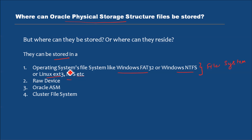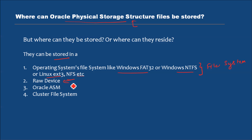These file systems are provided by the operating system installed on the machine where the database will be installed. So that's one option — option number one is file system. The next option is raw device. Most of the files in the physical storage structure can be installed on a raw device, which I'll explain later.